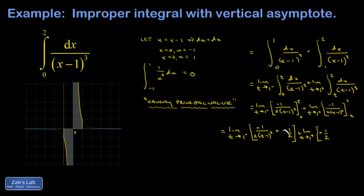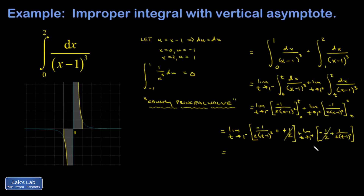I realize I made a sign error: when subtracting the lower limit from the first integral, it's a negative quantity so I should get a positive. Correcting this, the constant one-half terms — a positive one half and a negative one half — cancel out, leaving just the terms involving t: negative 1 over 2(t minus 1) squared from the first limit and positive 1 over 2(t minus 1) squared from the second.